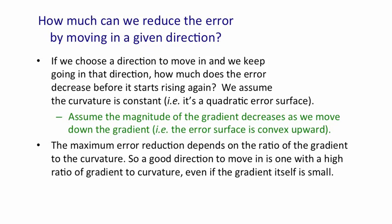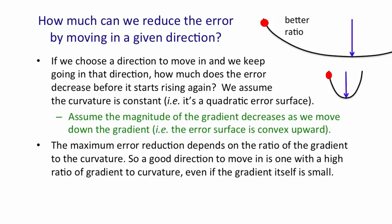Even if the gradient is quite small, we want the curvature to be even smaller. Here's an example of a direction we could move in, where the vertical axis corresponds to the error, the horizontal axis corresponds to the weights in the direction we're moving in, and the blue arrow corresponds to the reduction we get if we start at that red point. Here's a surface that has a gentler gradient, but because it's got a better ratio of the gradient to the curvature, we get a bigger reduction in the error by the time we get to the minimum.